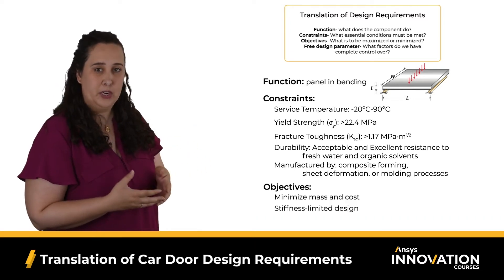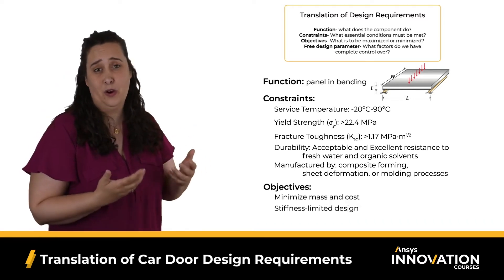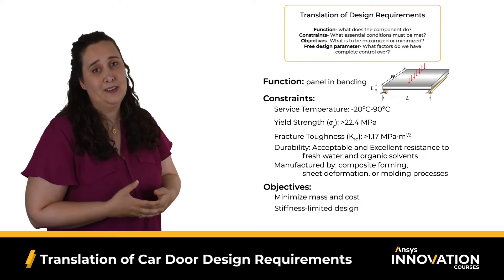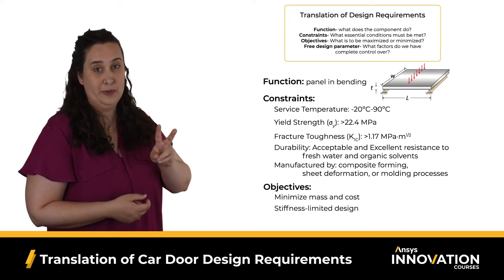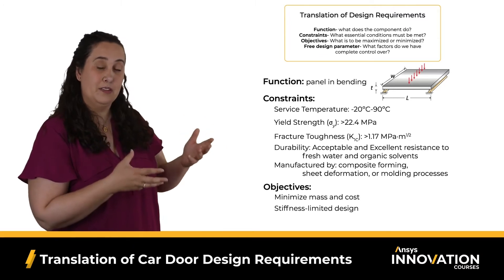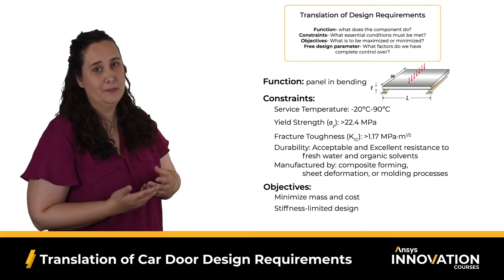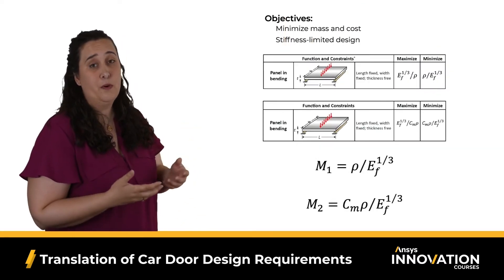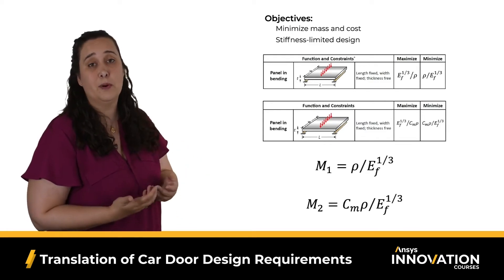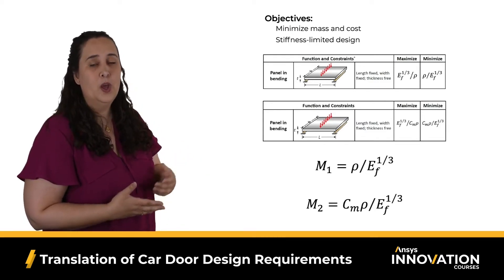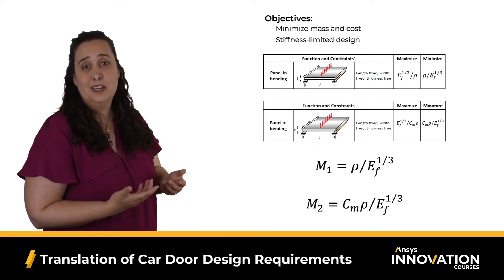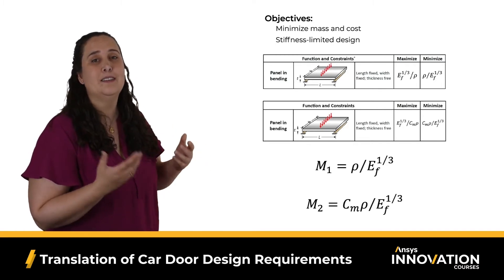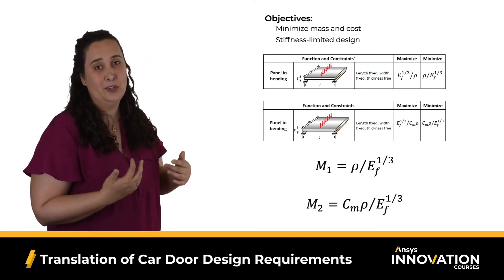Finally, we move on to our objectives. We want to have a lightweight car door panel that is also cost effective while still performing well in our stiffness-limited design. So that means we're going to need two performance indices: one for minimizing the mass and one for minimizing the cost performance. Looking at our performance index reference booklet, M1 for mass performance is density divided by Young's modulus to the one-third power, and M2 for cost performance is cost of material times density divided by Young's modulus to the one-third power.